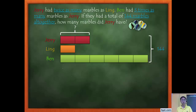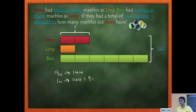Let's solve. Counting all units: 1 plus 2 plus 6 equals 9 units. So 9 units equals 144, meaning 1 unit equals 144 divided by 9, which is 16. Jerry has 2 units, so 16 times 2 equals 32 marbles.